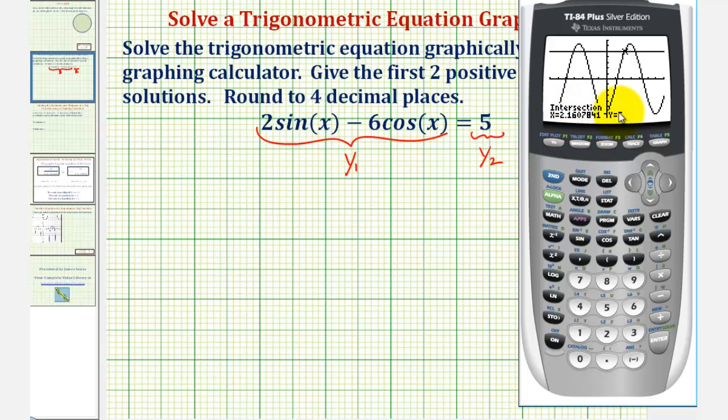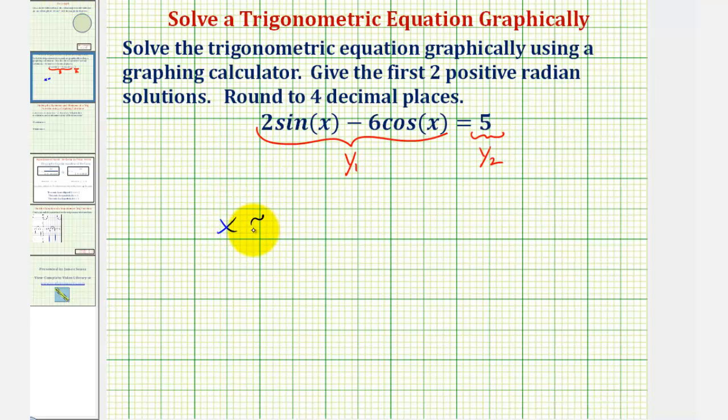Our first positive radian solution is approximately two point one six zero eight radians. Notice that this x value, y is equal to five. So again our first solution is x is approximately two point one six zero eight radians. We'll call this x sub one.